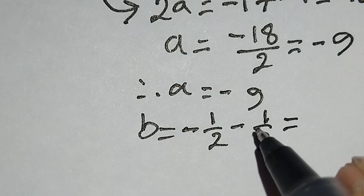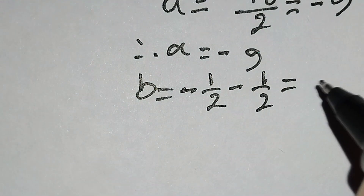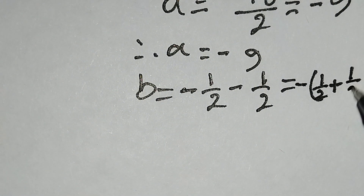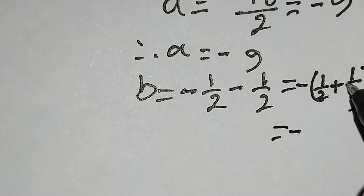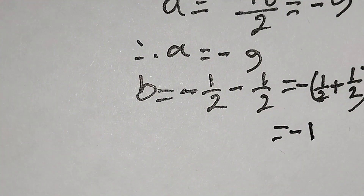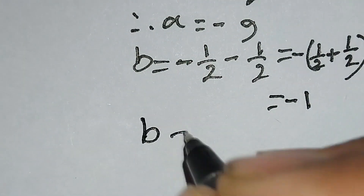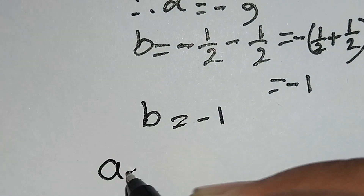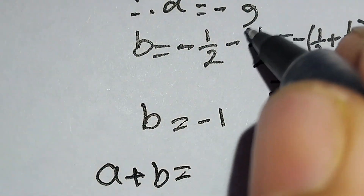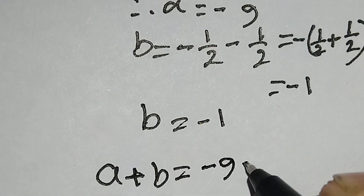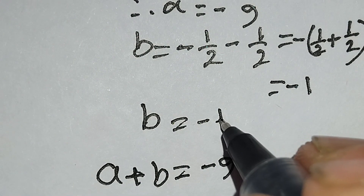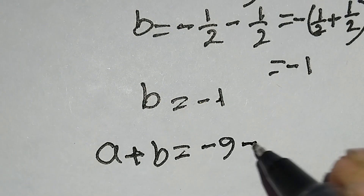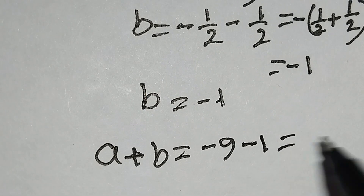We have −1/2 − 1/2. Taking out the common minus sign: −(1/2 + 1/2) = −1. So b = −1/2 − 1/2 = −1. Therefore from Case 2, a = −9 and b = −1, so a + b = −9 + (−1) = −10.